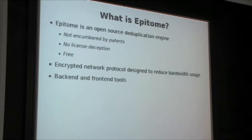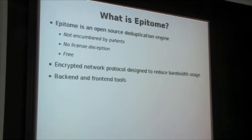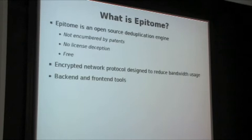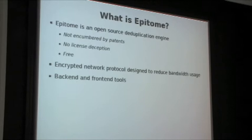So that brings us to Epitome. Epitome is an open source version. It's not covered by patents, there's no license deception, and it's free — the price is definitely right. It's an encrypted network protocol, and the design minimizes network traffic as much as possible — more resources are used upfront on all ends to achieve that goal. It's a series of tools. You have two major areas: the backend, which stores all the data, and the client, which does the hashing and transfers.